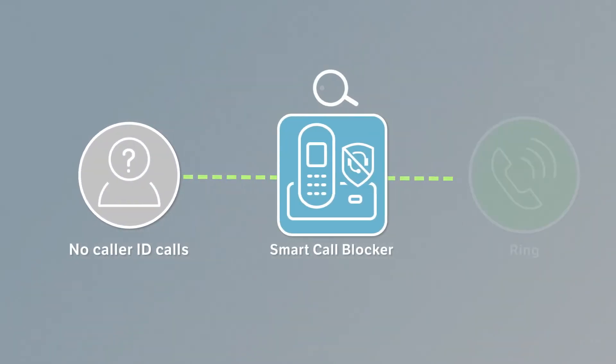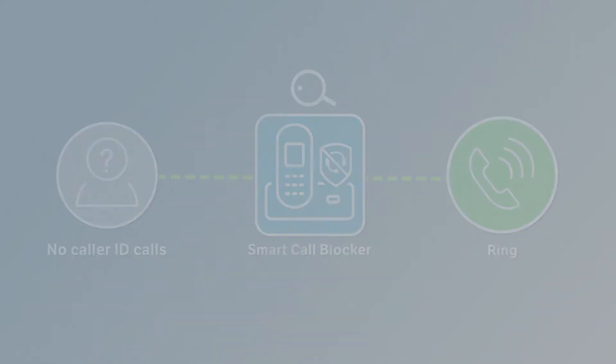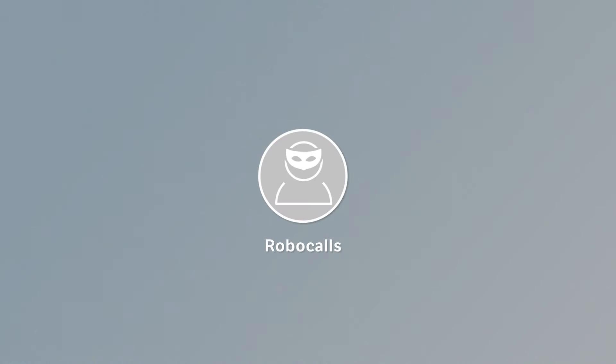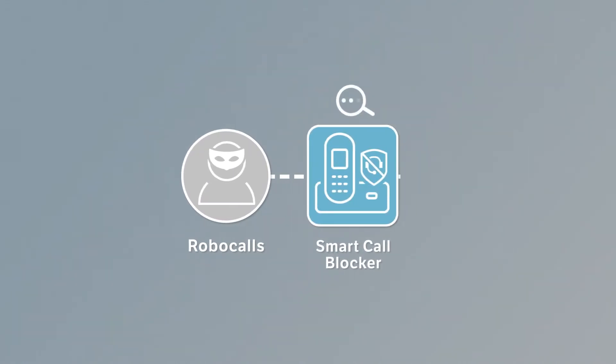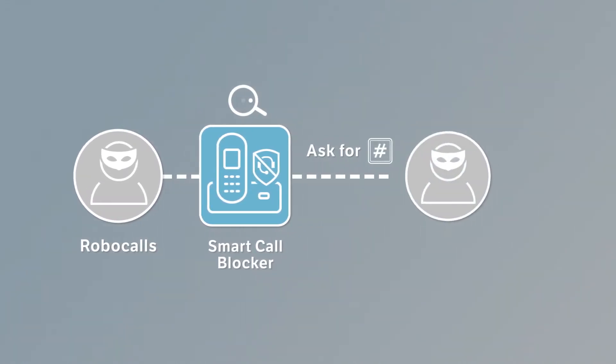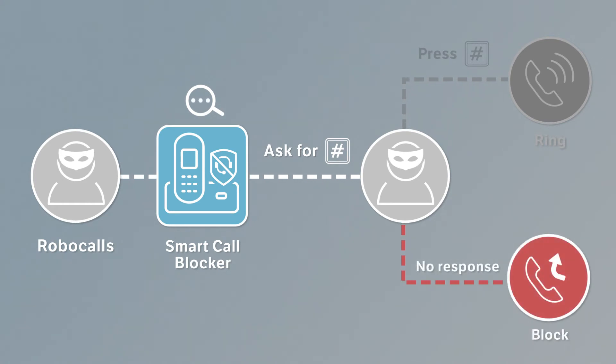With this setup, calls with no caller ID will ring. Robocalls, on the other hand, use pre-recorded messages and cannot respond by pressing the pound key, so they will be blocked.